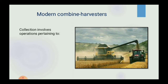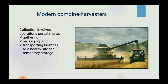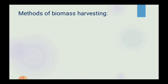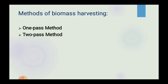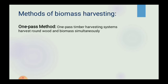Collection involves operations such as gathering, packaging and transporting biomass to a nearby site for temporary storage. There are basically two methods of biomass harvesting: the one-pass method and the two-pass method. In the one-pass method, timber harvesting systems harvest round wood and biomass simultaneously. It is the most cost-effective extraction method.